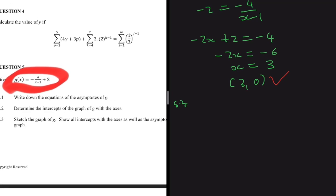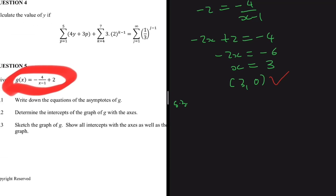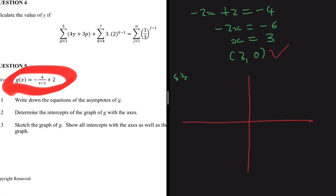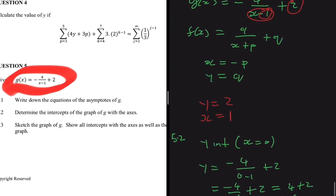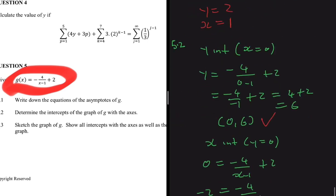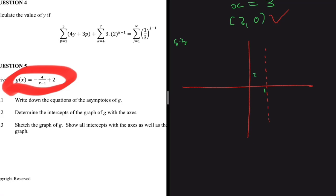Question 5.3 asks us to sketch the graph of g, showing all intercepts with the axes as well as the asymptotes. When sketching a hyperbola, you basically just need the intercepts and the asymptotes. Let's draw our x-axis and y-axis. The vertical asymptote is x equals 1, drawn as a vertical dashed line at x equals 1, and the horizontal asymptote y equals 2, drawn as a horizontal dashed line at y equals 2.